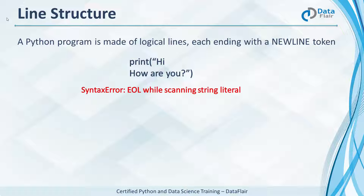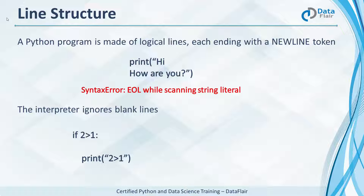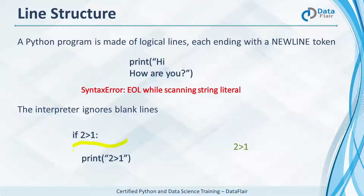Actually, you can break statements over multiple lines — we'll discuss this in the next slide. The interpreter also ignores blank lines. This code has three lines, the second of which is a blank line, but it works perfectly. The output is 'two greater than one,' because since two is greater than one, it prints that.